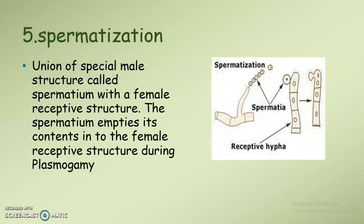The fifth method is spermatization, which is different from the other methods. Here we can see a special male structure called spermatium, and the female structure is called the female receptive hyphae or female receptive structure. The spermatium comes close to the female structure and empties its contents into the receptive structure during plasmogamy.